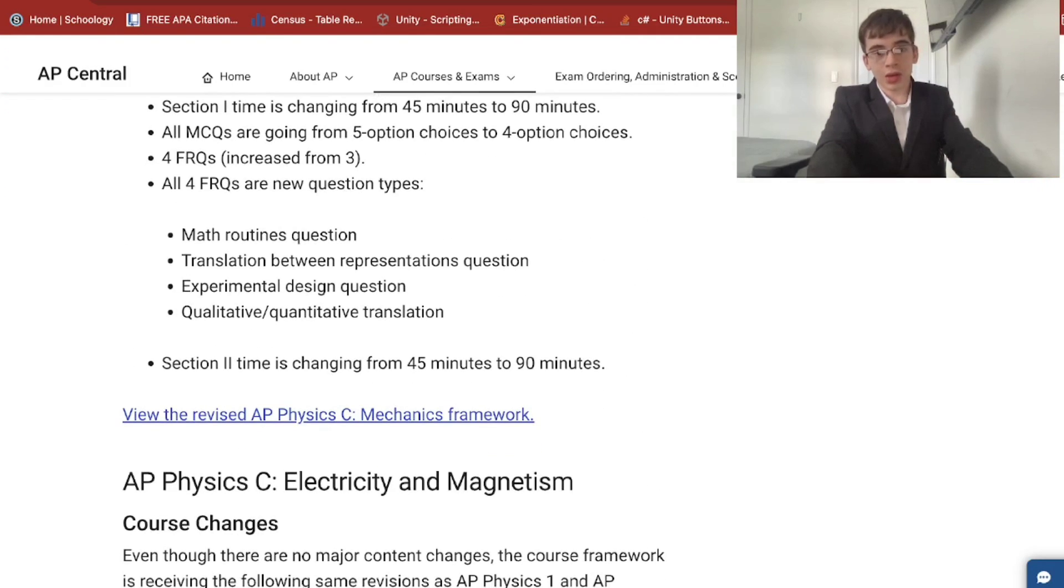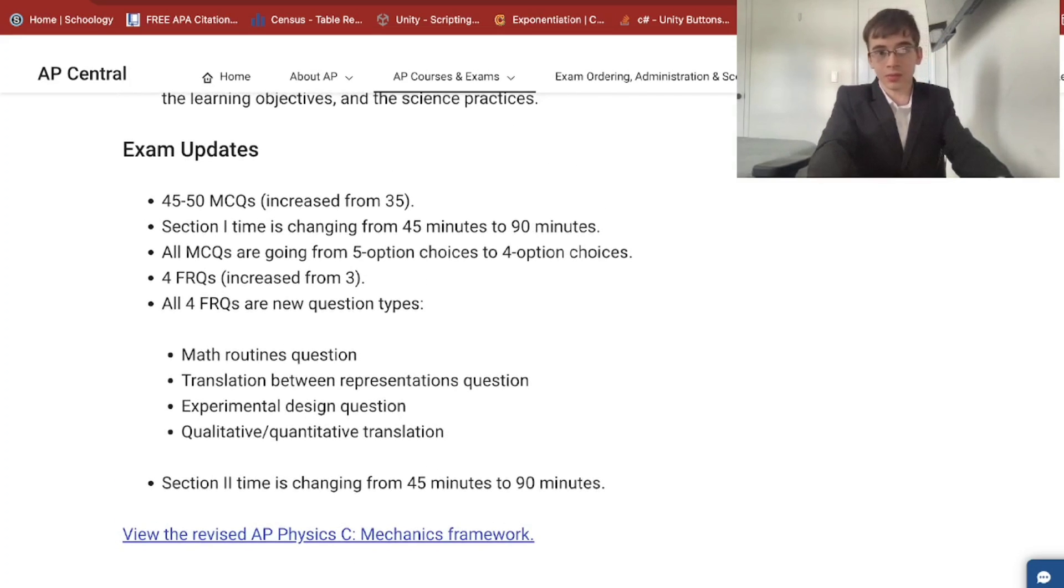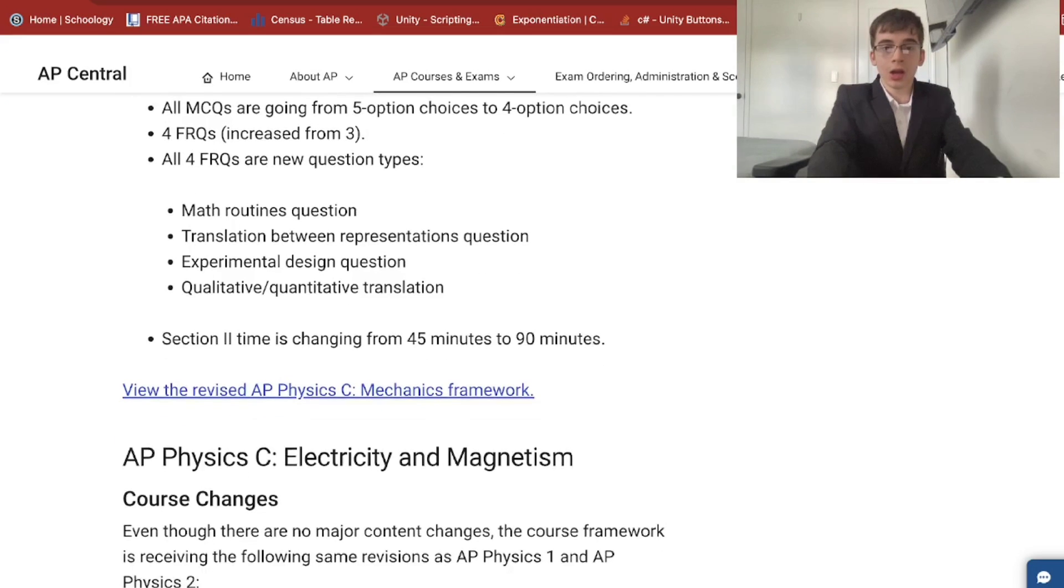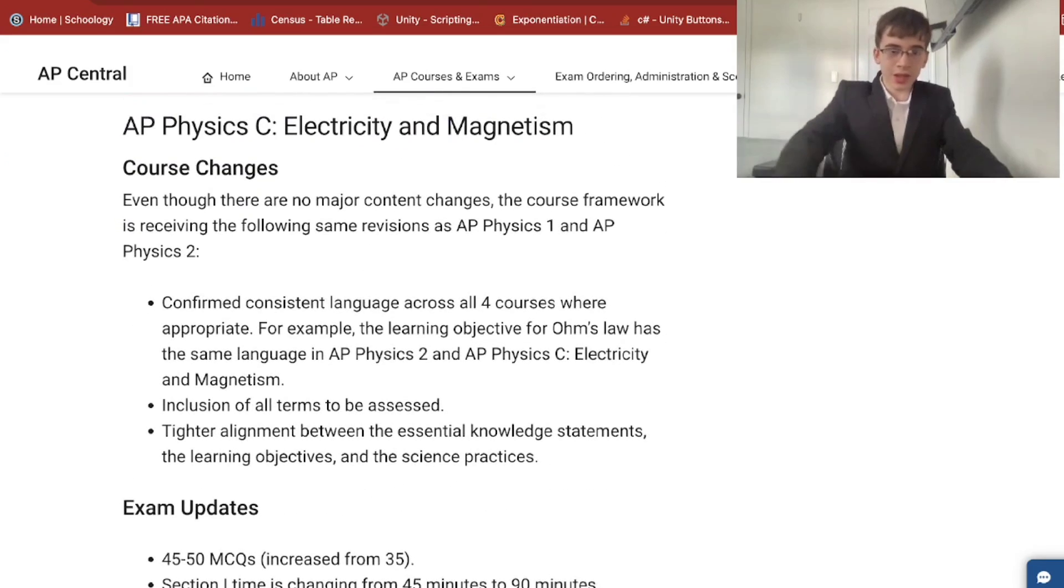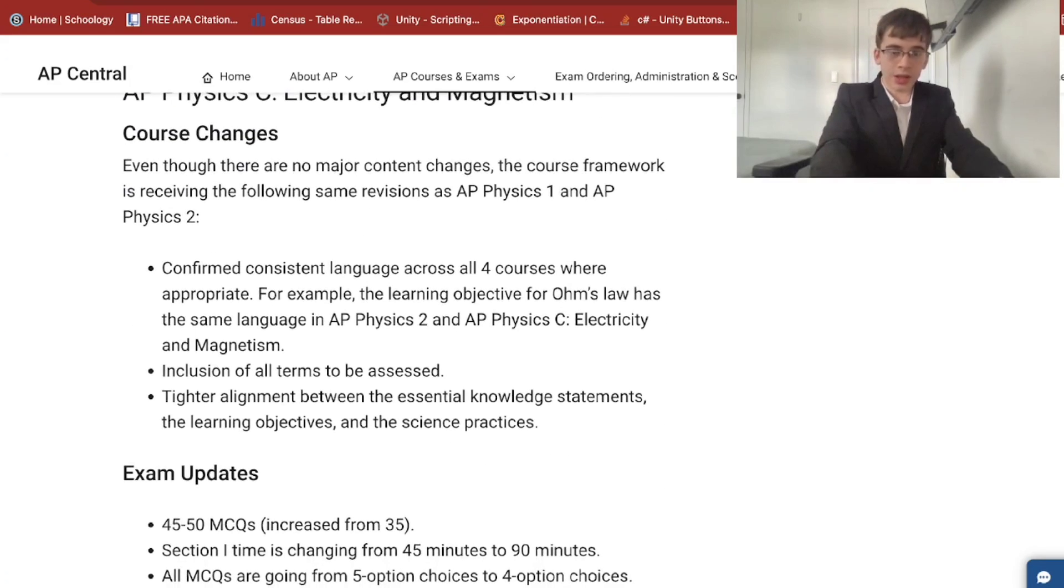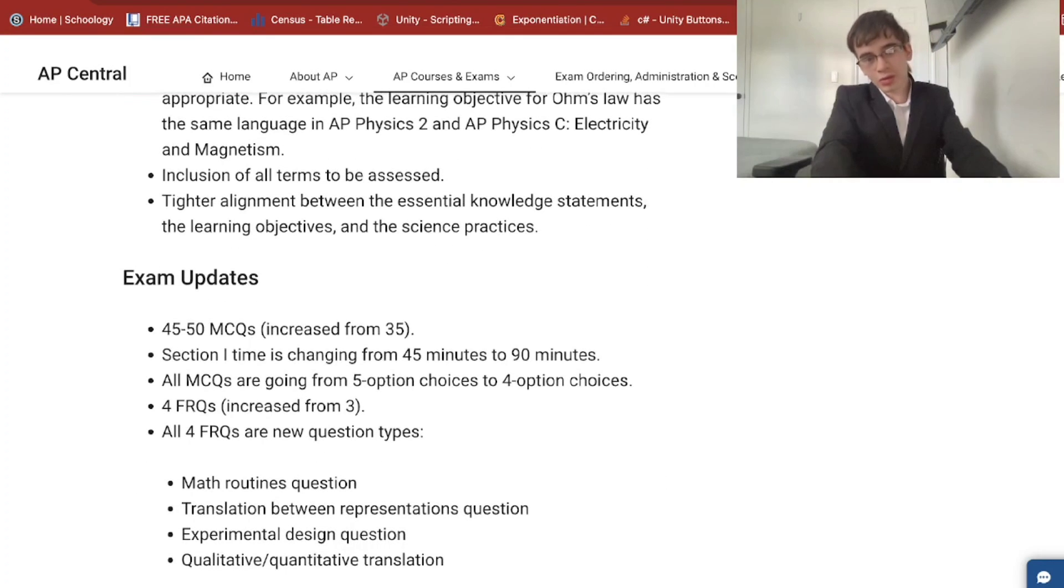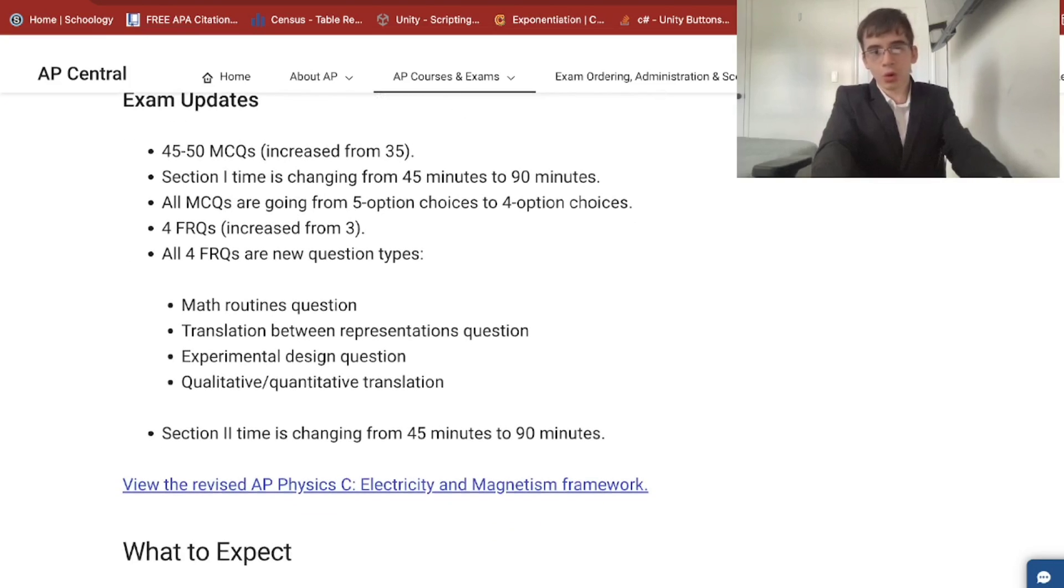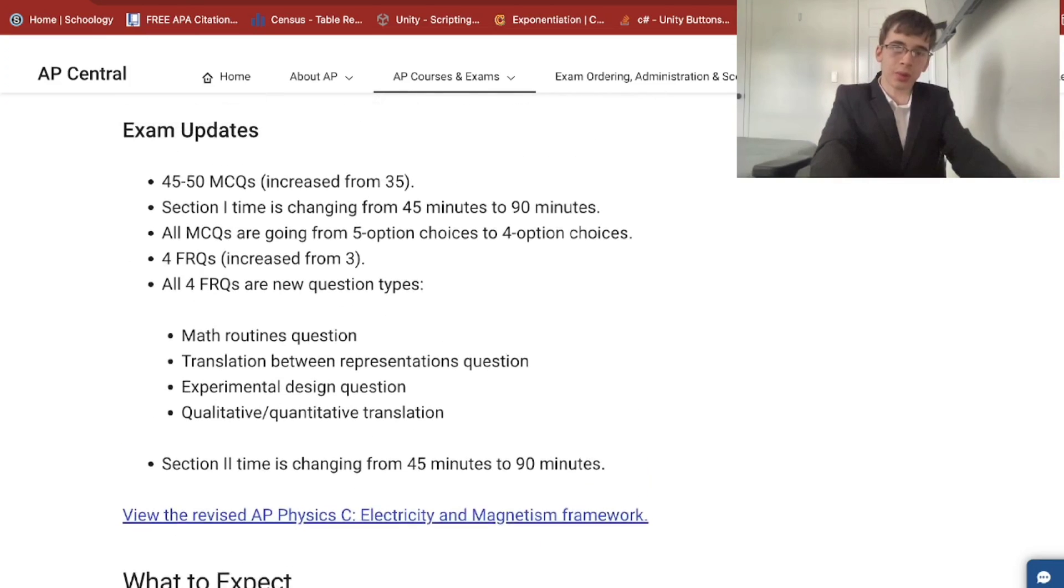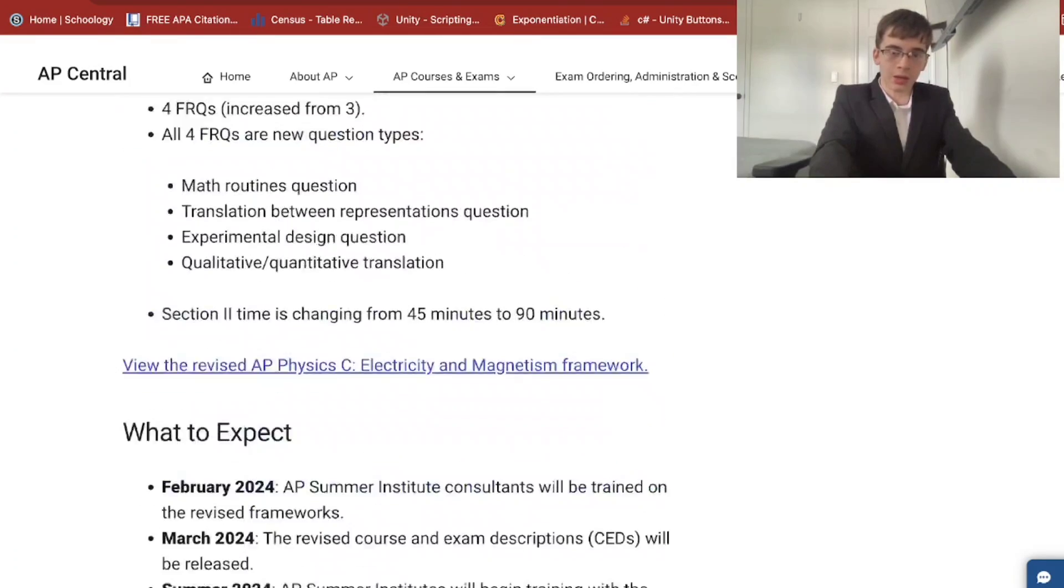Section two time is changing from 45 to 90. So the whole exam is actually increasing by some time from 90 to 180 minutes, from 90 minutes to three hours. Physics C, electricity and magnetism wise, again, no major content changes regarding Physics C. However, MCQs increased from 35 as well. Section one time increasing, MCQ from five option to four option. Basically similar to AP Physics C Mechanics.